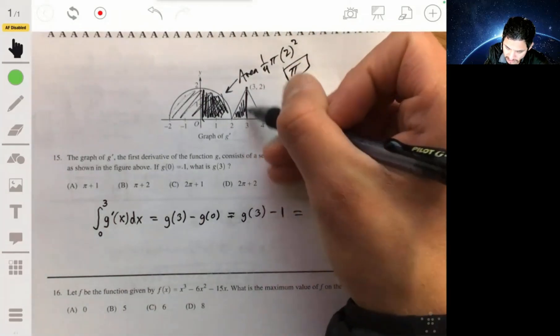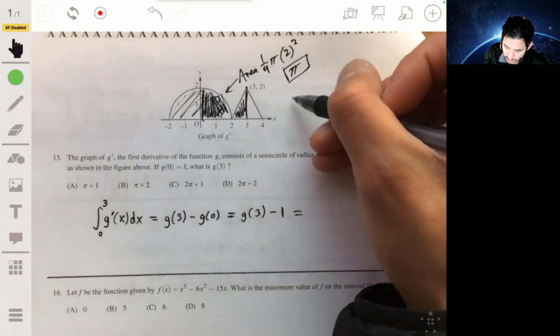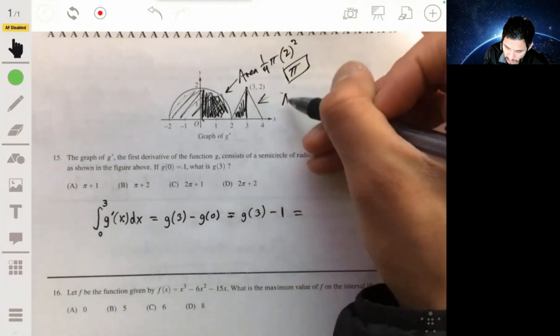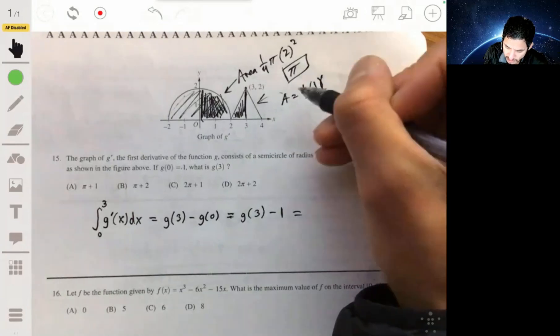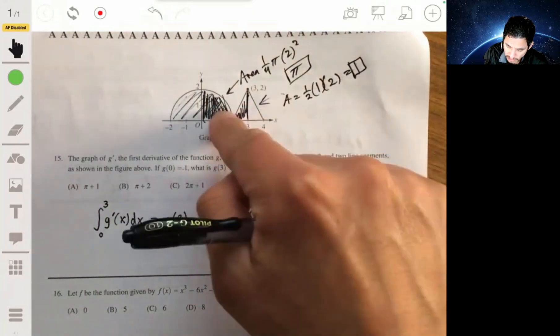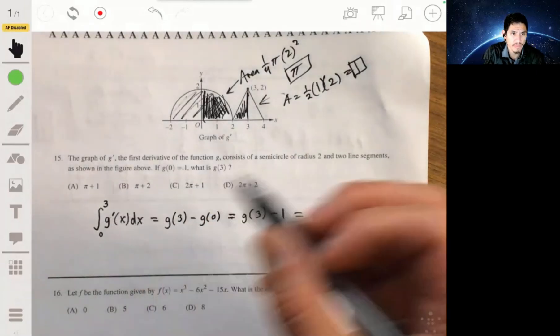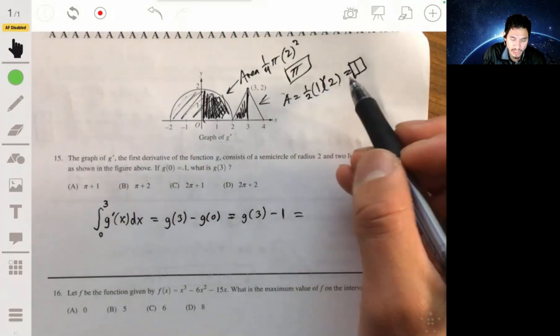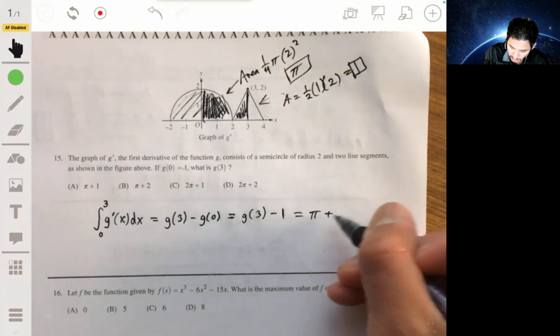And then the area of this triangle will be half base times height. The base is 1, the height is 2, so it would simply be 1. So the total area from 0 to 3 of this integral will be pi plus 1. If this has an area of pi, this has an area of 1, this total area will be pi plus 1.